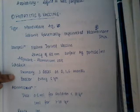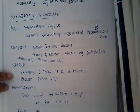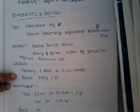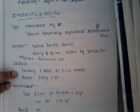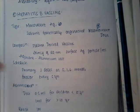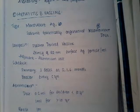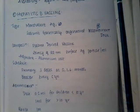The national schedule of Hepatitis B vaccine: primarily we give 3 doses at 0, 1 and 6 months. And we give a booster every 5 years.